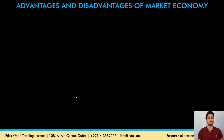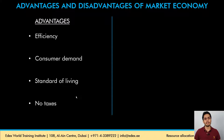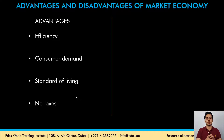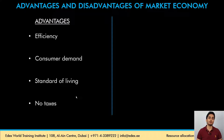Looking at the advantages of a market economy: the first is efficiency in resource utilization, because private players always work for profit. Their only motive is profit, so they will make sure resources are not wasted and are utilized to their best potential. The second advantage is that consumer demand is the center of all resource allocation decisions — producers will produce and sell what consumers want. This is good from the consumer's point of view, as they can consume the goods they actually want and enjoy a good standard of living.